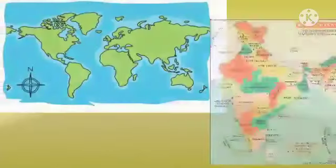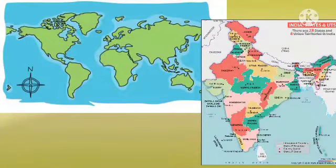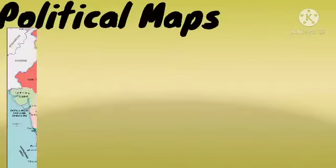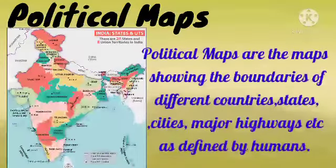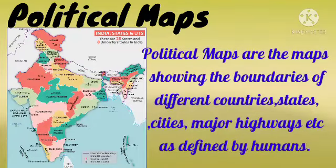Maps can be of the world or a country. First, political maps are maps showing the boundaries of different countries, states, cities, major highways, etc., as defined by humans.